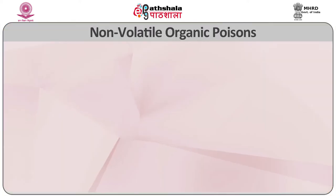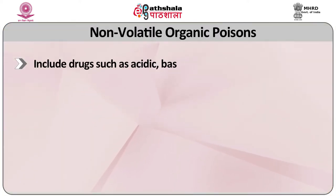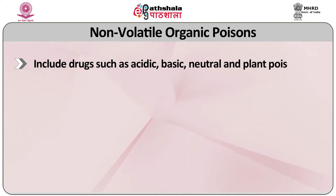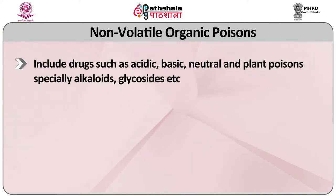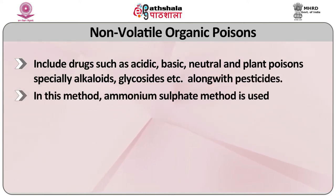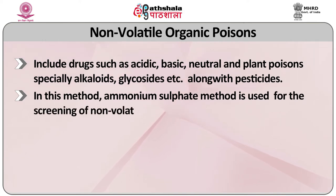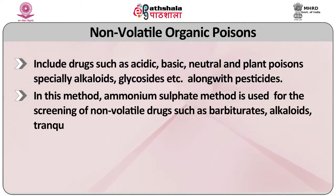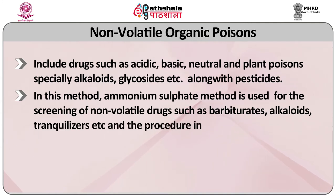The first category is non-volatile organic poisons. Non-volatile organic poisons include drugs such as acidic, basic, neutral and plant poisons, especially alkaloids, glycosides, etc., along with the pesticides. In this method, the ammonium sulfate method is used for the screening of non-volatile drugs such as barbiturates, alkaloids, tranquilizers, etc.